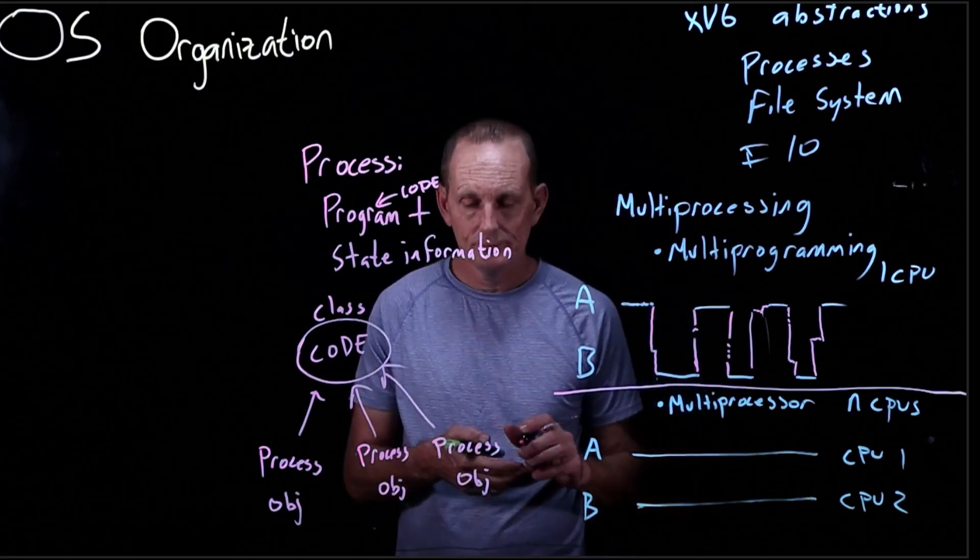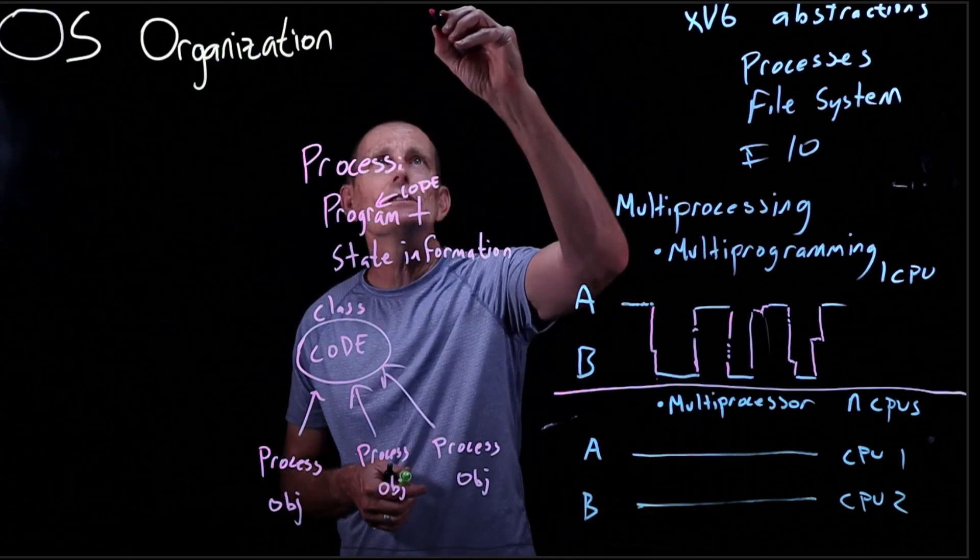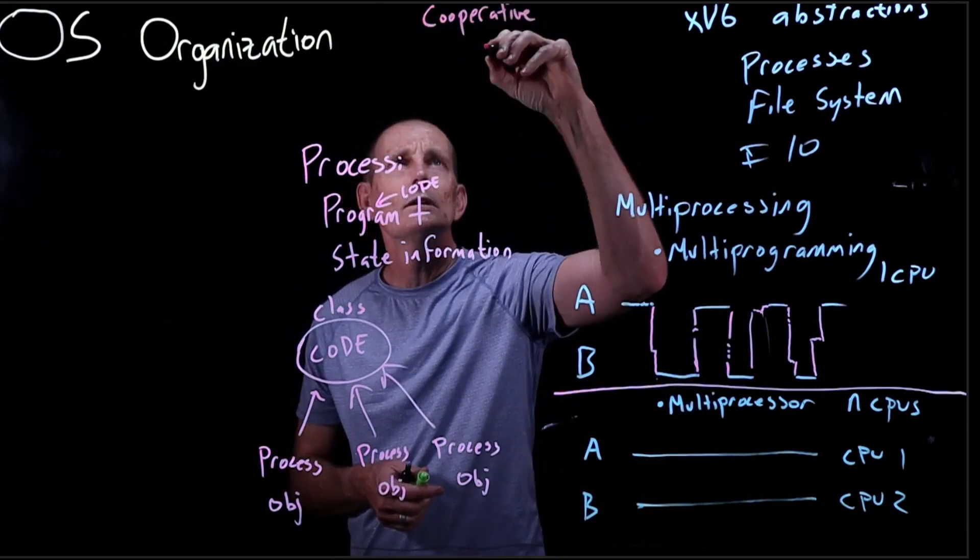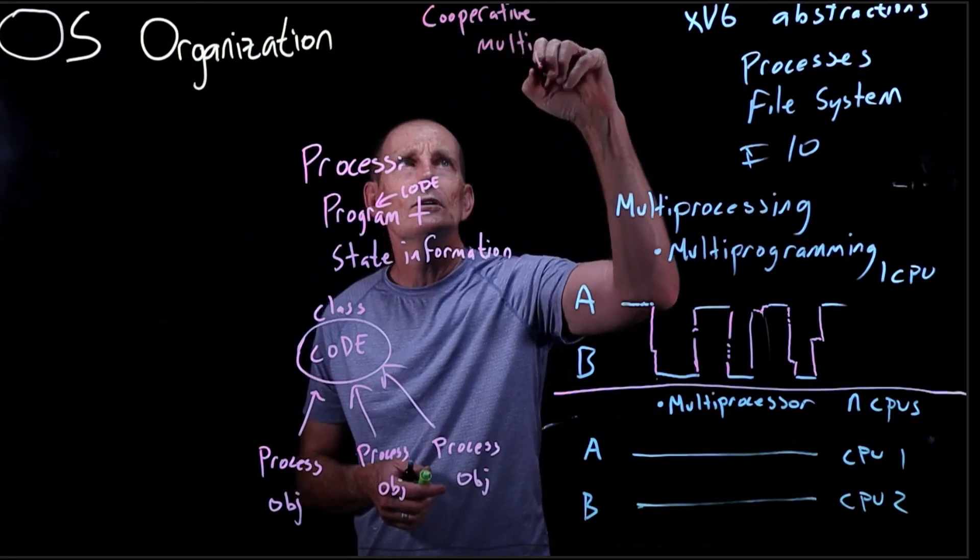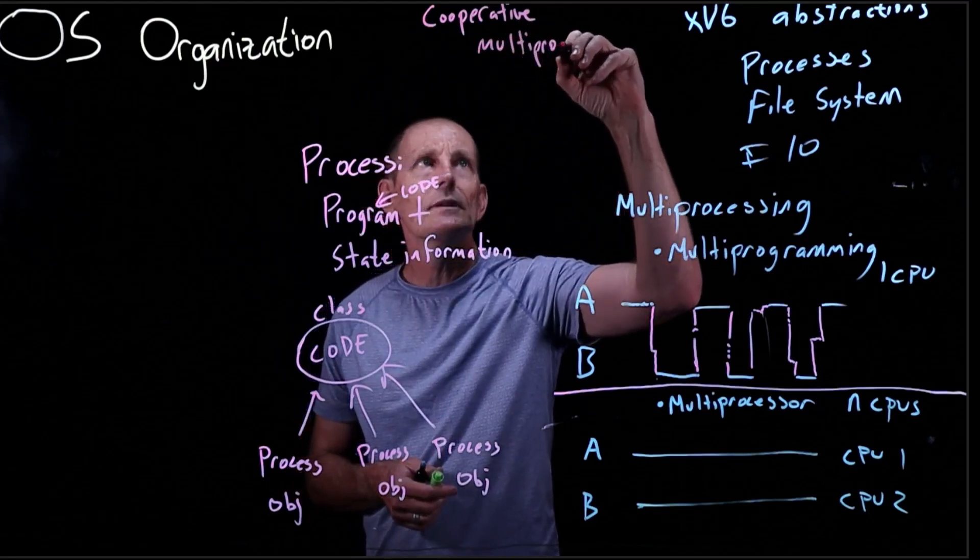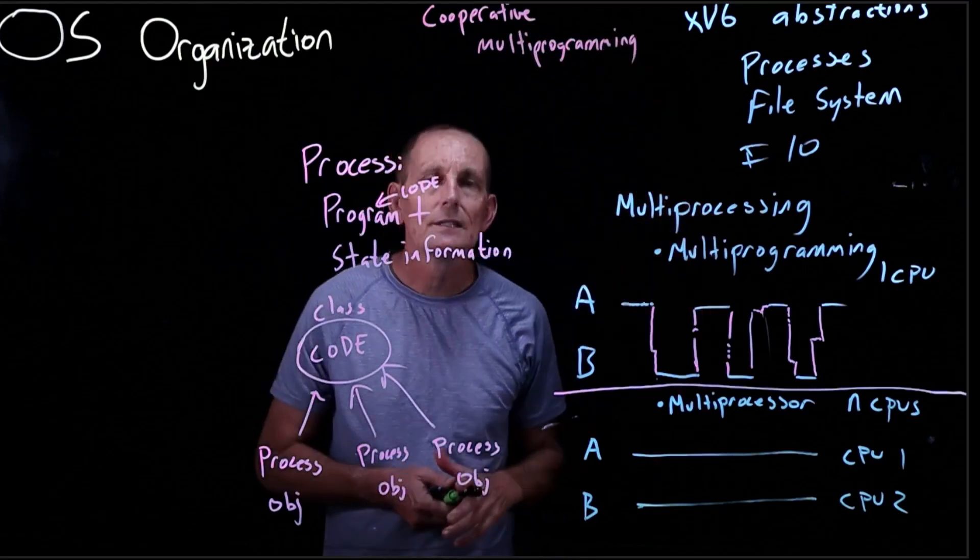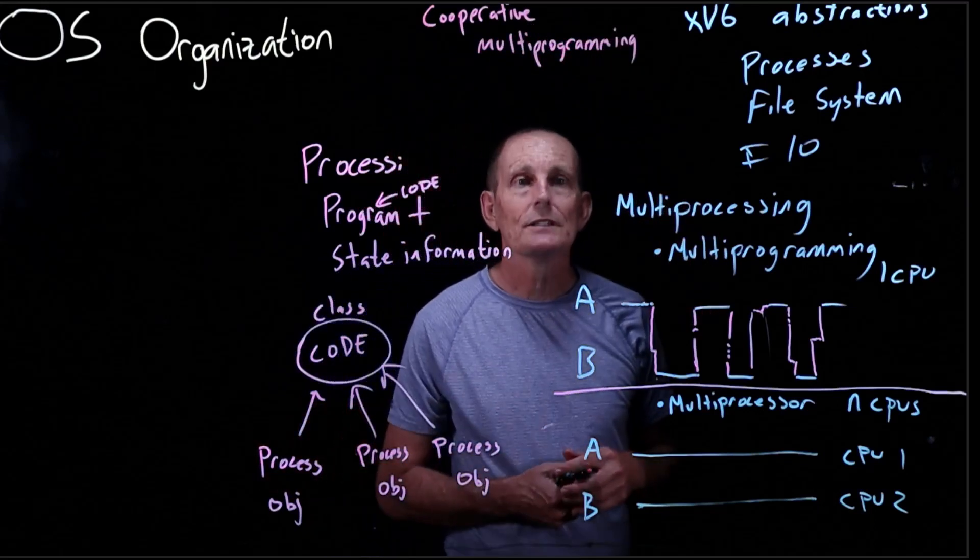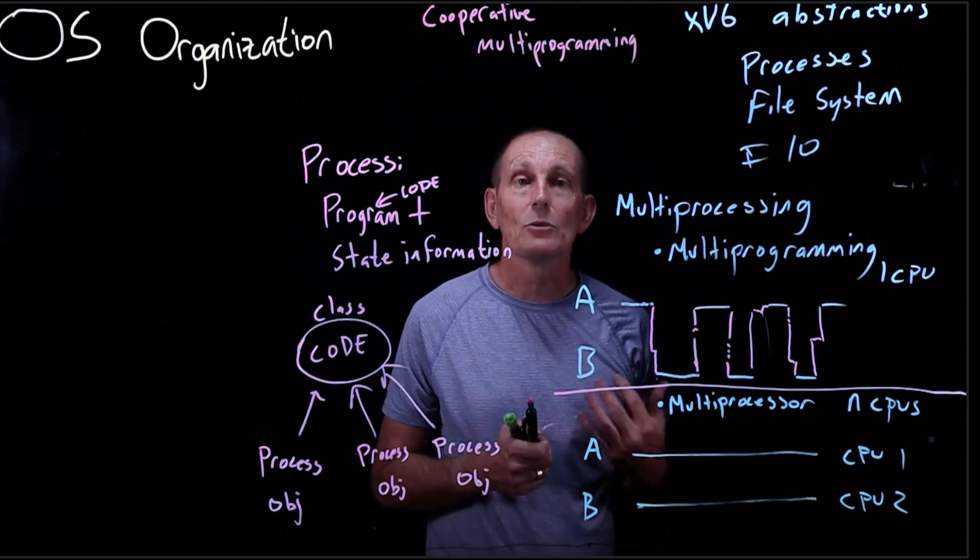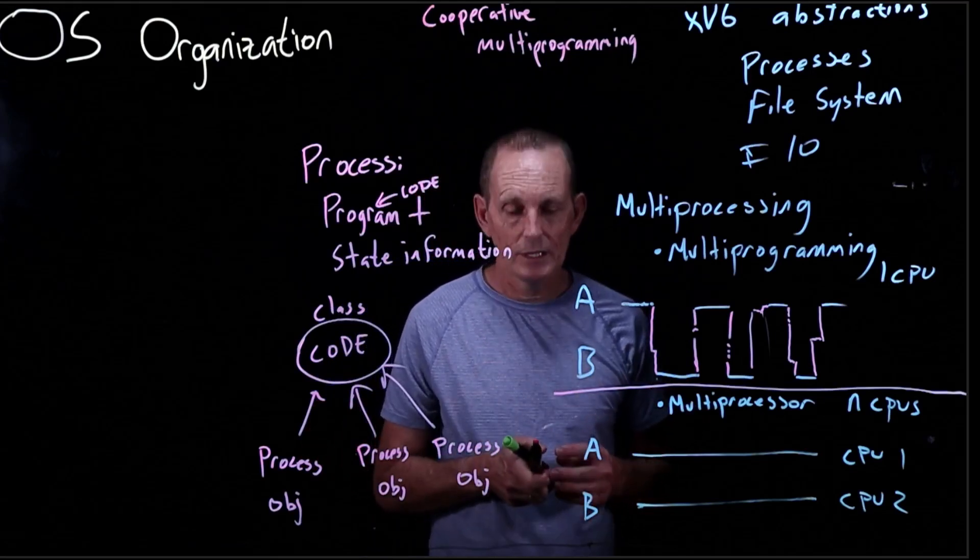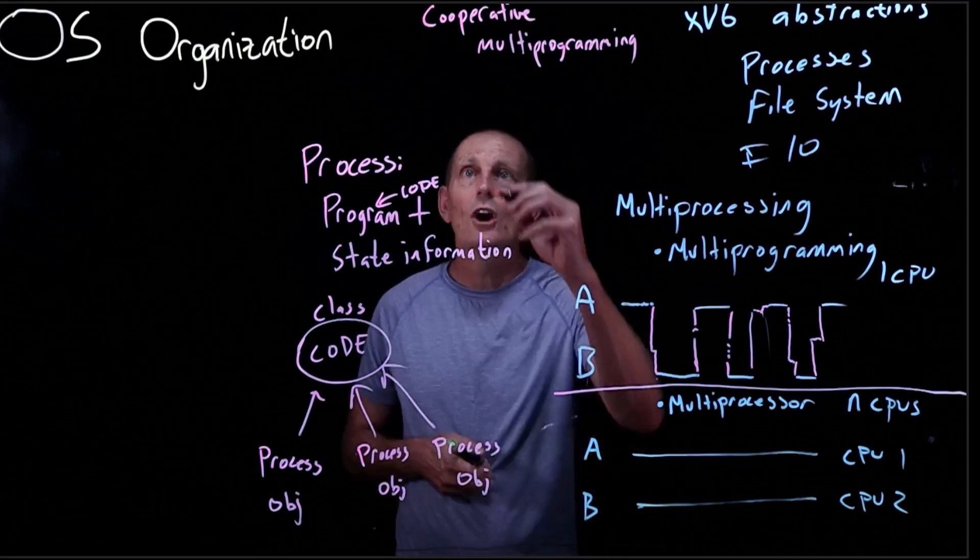We could have cooperative multiprogramming. In this case again, the process is aware of it and it happens at a well-known time when the process says this is an okay time to do it, usually some call like yield.